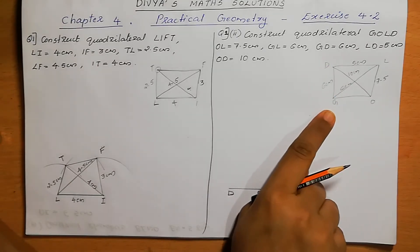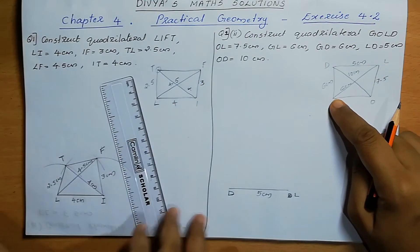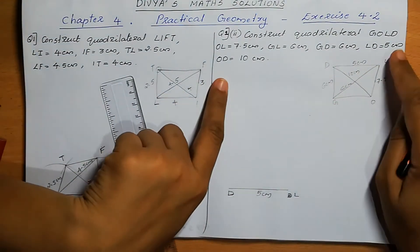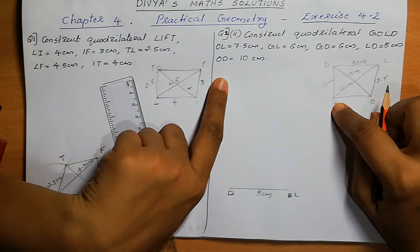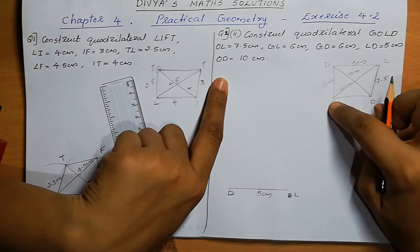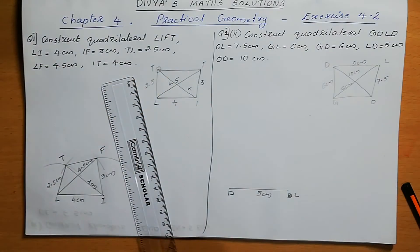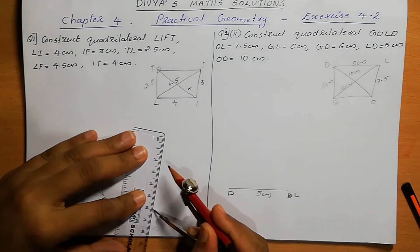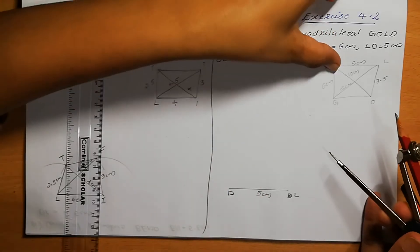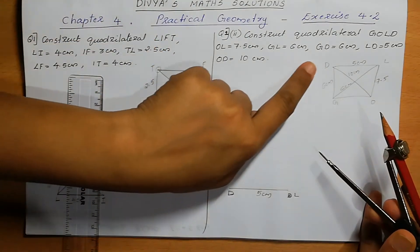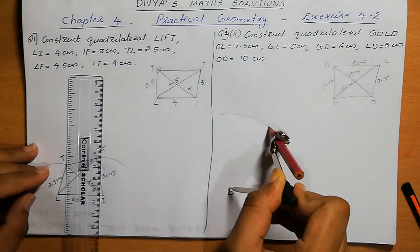Next, D to G is 6 cm. The point of intersection for G: LG is 6 cm given and DG is 6 cm. So this is the point of intersection for point G. From D we can draw an arc of 6 cm. From D, DG is 6 cm.